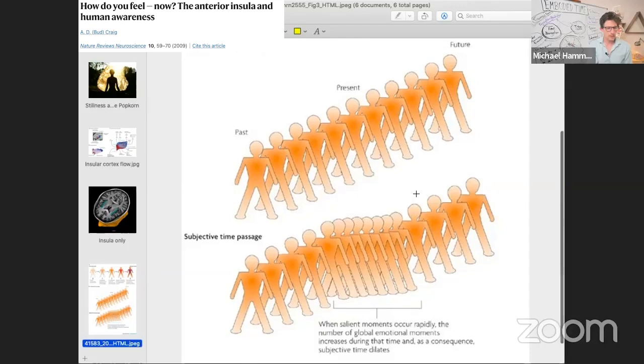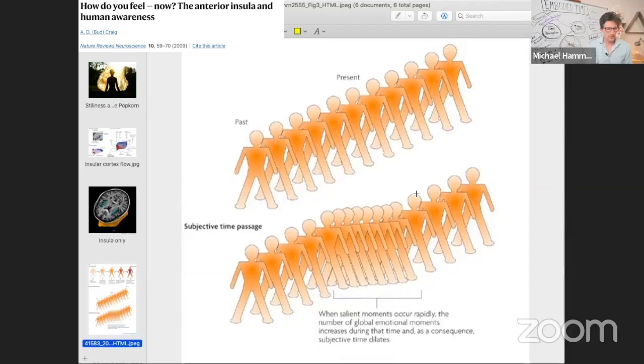But of course, in reality, we don't have a regular metrical march of these frames of self. We have a breathing, meandering, we have compressions of self and expansions of self in time that has to do with the saliency of our experience.